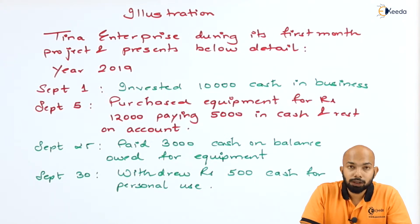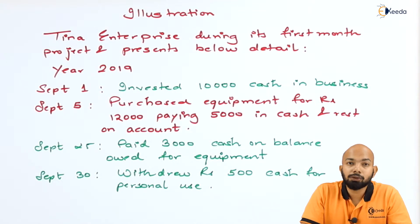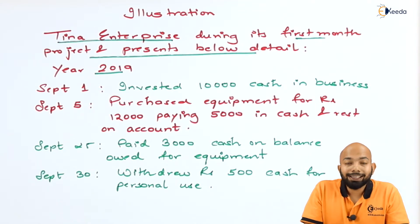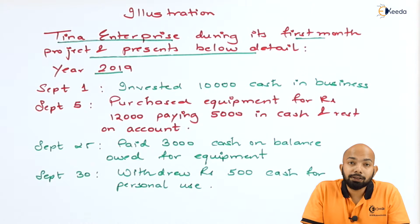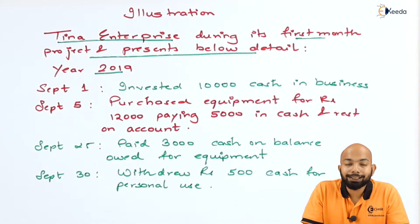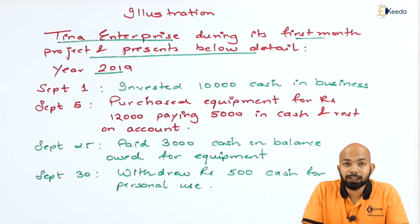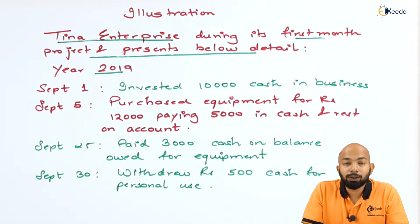Let's figure out the illustration first. We have an illustration regarding Tina Enterprises. For the year 2019, certain details have been given. You need to pass the journal entry first and then figure out how the ledger balance is supposed to be prepared. Let's first understand each entry and note them down before we proceed with journal entries.